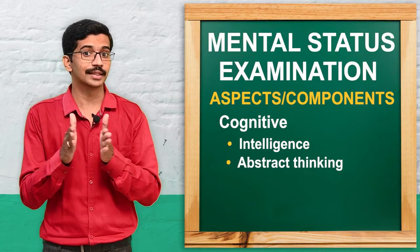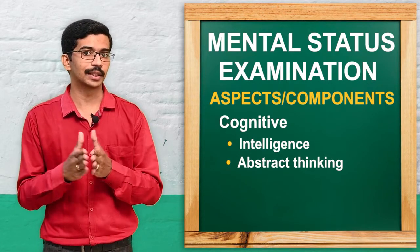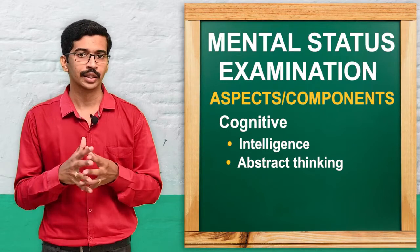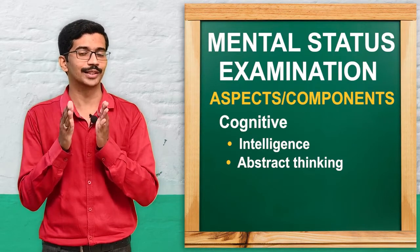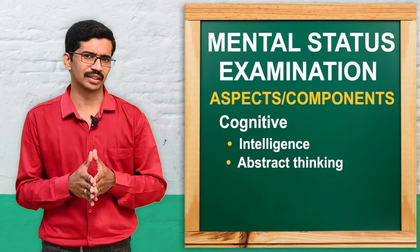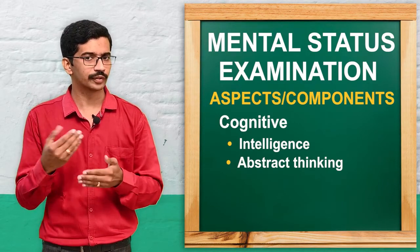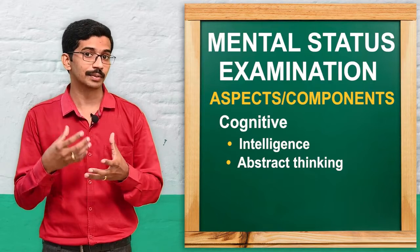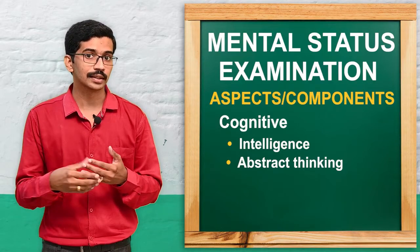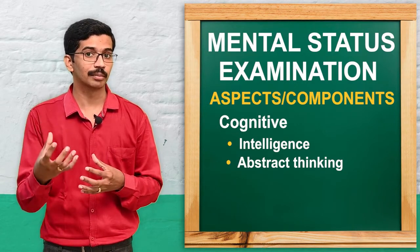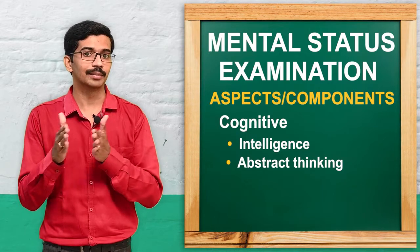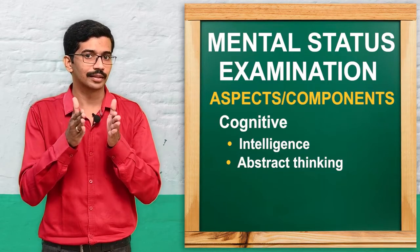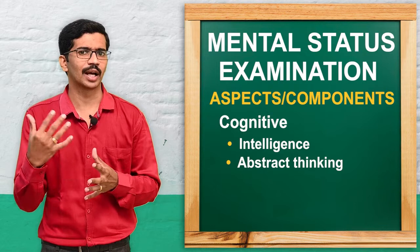Next is intelligence and abstract thinking. Here we assess the patient's level of knowledge and logical thinking, relative to their educational status and level of understanding. Simple questions include: 'Who is the President of India?' or arithmetic questions like '36 plus 64'. For abstract thinking, we can ask the patient to explain the meaning of certain proverbs, or identify similarities and differences between objects — for example, the difference between an apple and an orange, or between a table and a chair.